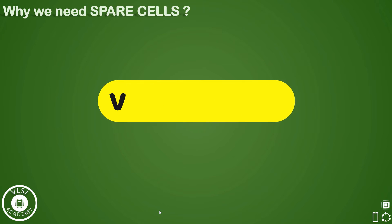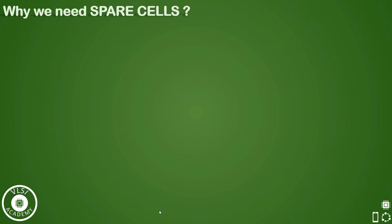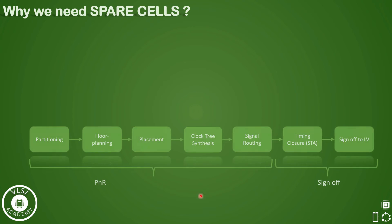Now the next question that arises is: why do we need the spare cells in the first place? But before we answer that, if you observe in the VLSI spectrum we do the partitioning first, then floor planning, and then placement. Now we are learning about placement, and in placement we do the placement of standard cells.